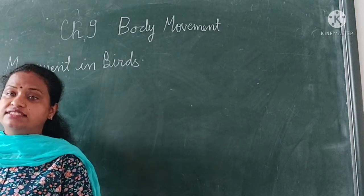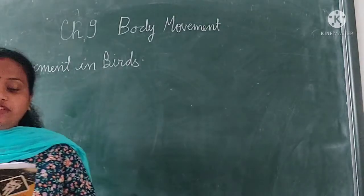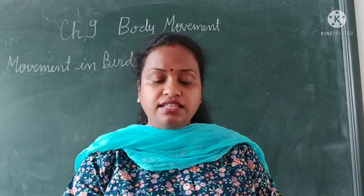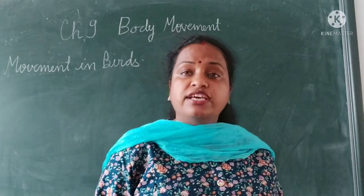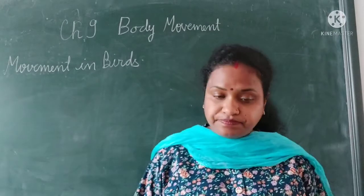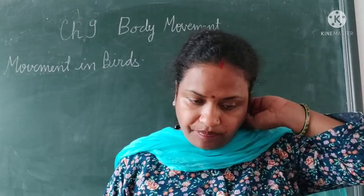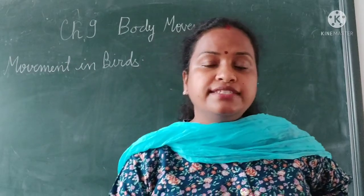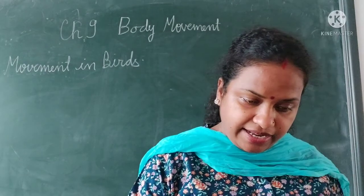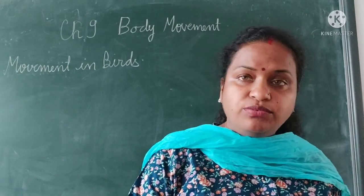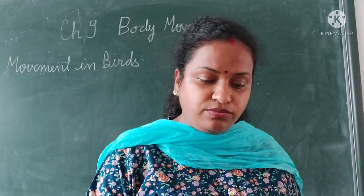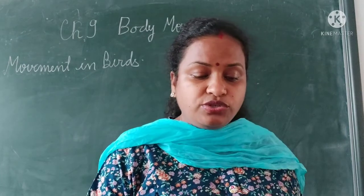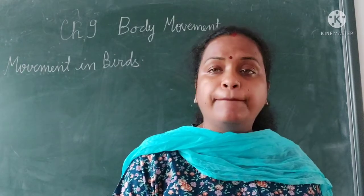Flying birds have wings covered with feathers which allow them to fly. They have a streamlined body — as you studied in fish — which makes it easier for them to move in air. They have a strong but light skeleton with a large breastbone to support powerful muscles for flapping wings up and down.